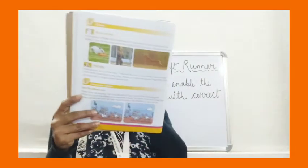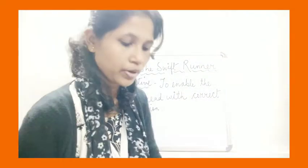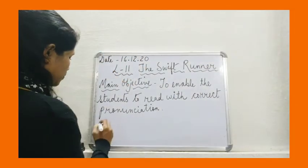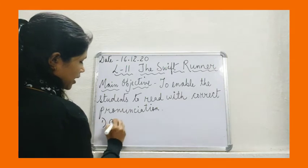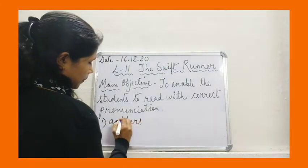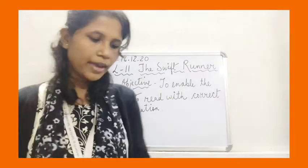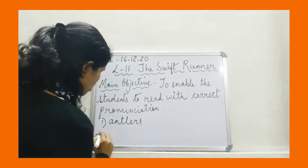The first new word is 'antlers' — A-N-T-L-E-R-S. Antlers means horn. The deer have a beautiful horn on their head of different shapes — it is called antlers. The next word is 'woods.' Woods means a small jungle, a small forest — land covered with growing trees, smaller than a forest.